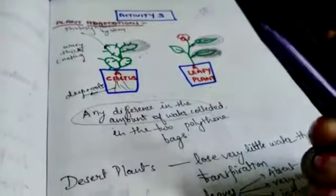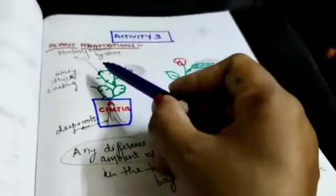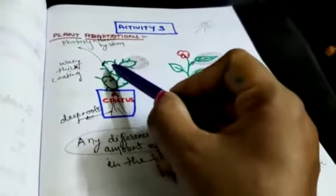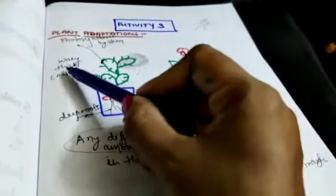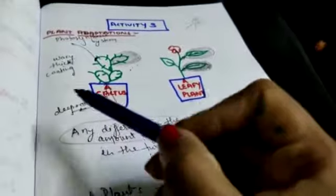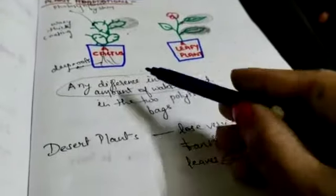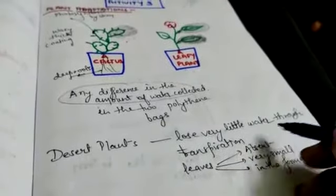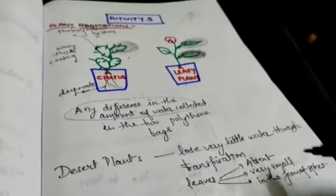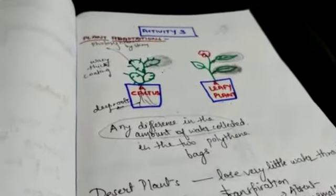So this is the adaptation. You are observing here leaves, but here the spines. Photosynthesis is done by the green colored stem, this modified stem. And here there is thick waxy coating that does not allow water to escape out. Then roots are deeply rooted to absorb water for the survival of plant. Desert plants lose very little water through transpiration. Leaves may be absent or very small or in the form of spines, as you are observing in case of cactus.